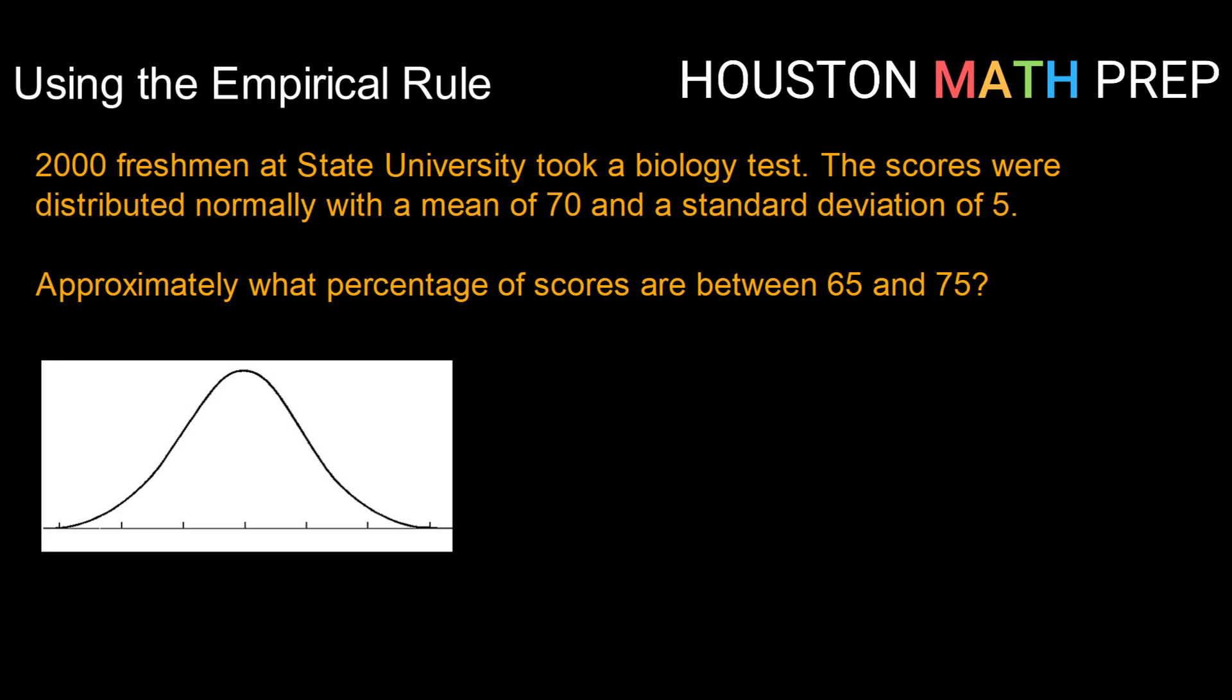So we've got a big clue here. Seeing the terms distributed normally tells us that we're able to use the empirical rule. We were also told our mean, or our x-bar, and our standard deviation, or our s.